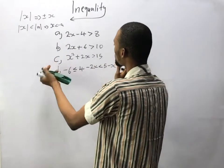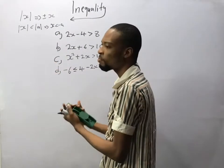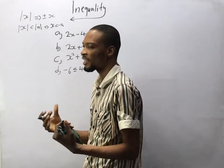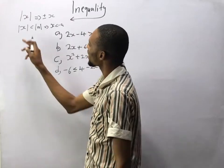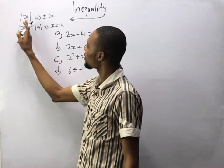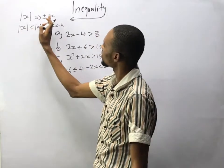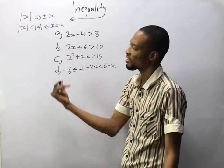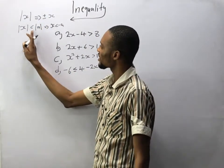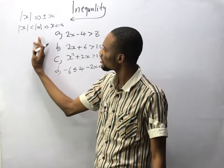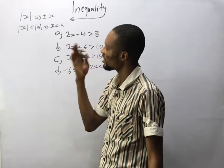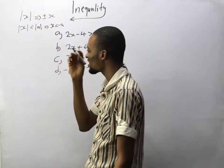Before the questions, let me add one or two things. If you are given an absolute value in inequality, the absolute value of s is the same thing as plus or minus s. If I say the absolute value of s is lesser than the absolute value of a, it is the same thing as s is lesser than a and s is greater than minus a.